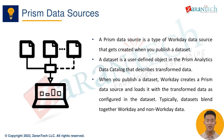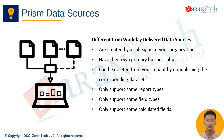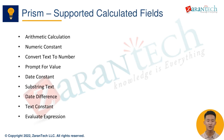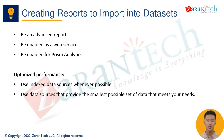Prism data sources only support some report types, fields, and calculations. Supported calculations include arithmetic, constants, date functions, evaluate expression, prompts, substrings, and more. To optimize reports for Prism Analytics, make them advanced and enabled as a web service, use indexed data sources when possible, and only include the minimum data set required. Custom reports, simple matrix, and composite report types have the best support.